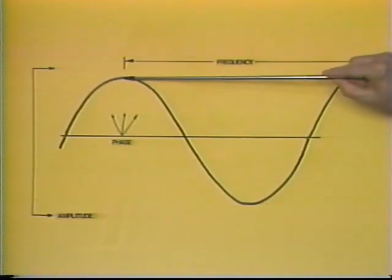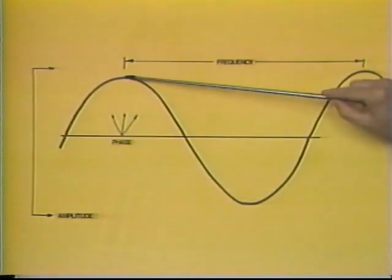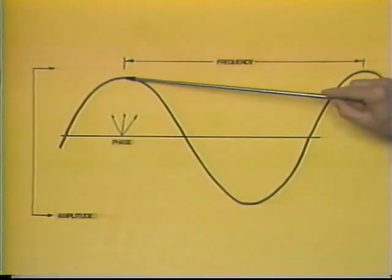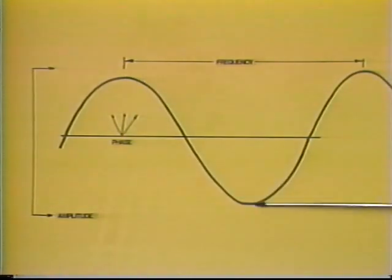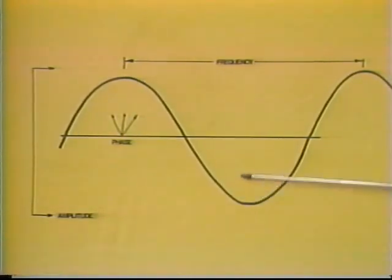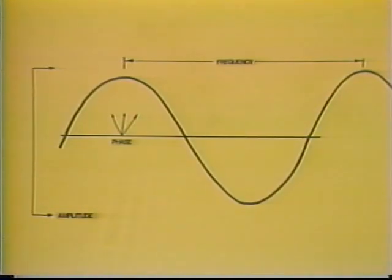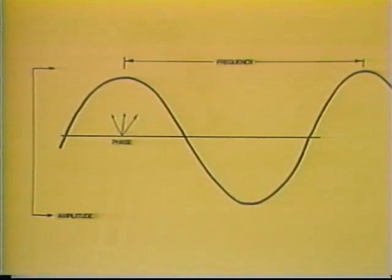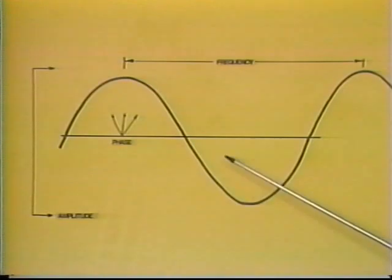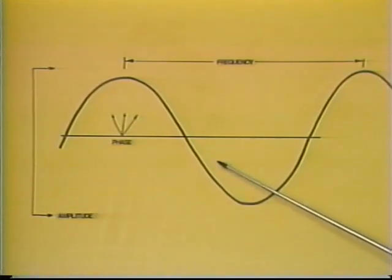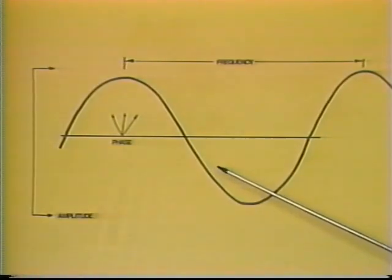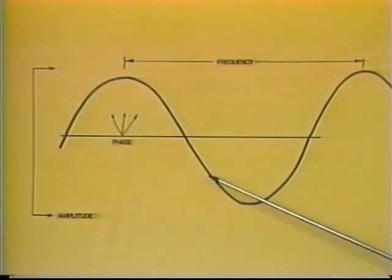In addition, the height of the peaks — from the positive peak to the negative peak — is the strength or loudness of the voice on the line. We measure this in what's called amplitude, which is the measure of strength of the signal.